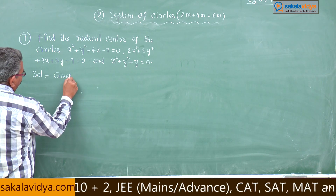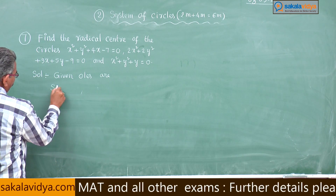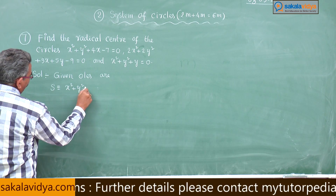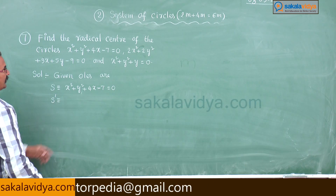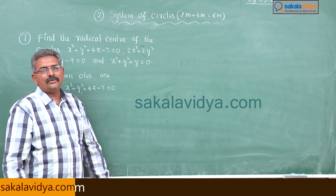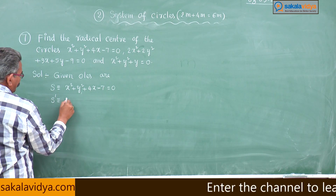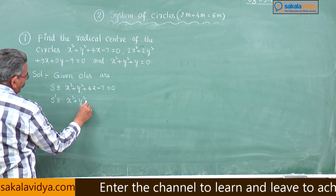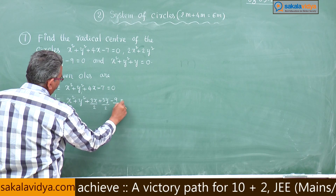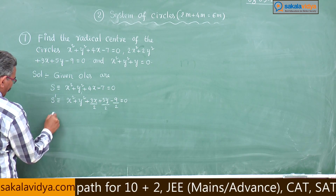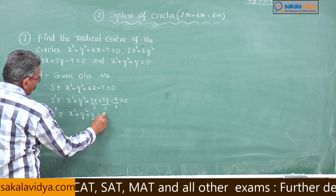Given circles are: S = x² + y² + 4x − 7 = 0. The second circle is not in the general form; we have to put it in general form, making the x² and y² coefficients unity, so divide by 2. We get x² + y² + (3x/2) + (5y/2) − (9/2) = 0. The third one need not change: x² + y² + y = 0.